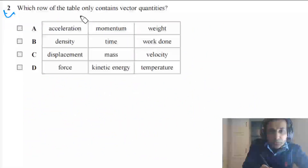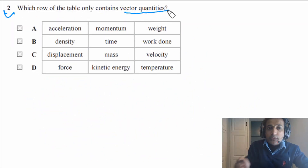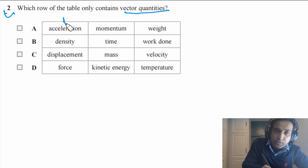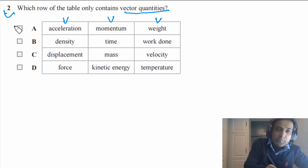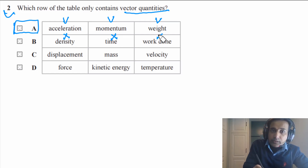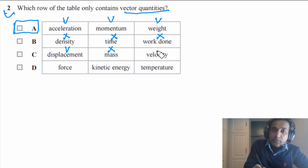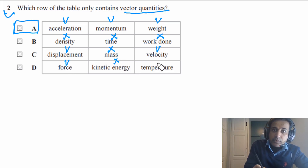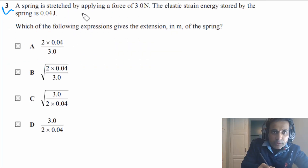Question 2 says: which row of the table only contains vector quantities? Looking at option A: acceleration is a vector, momentum is a vector, weight is also a vector — so the answer has to be A. In option B, density is not a vector, time is not a vector, work done is also not a vector. Displacement is a vector, mass is not, velocity is a vector, force is a vector, kinetic energy is a scalar, temperature is also scalar.